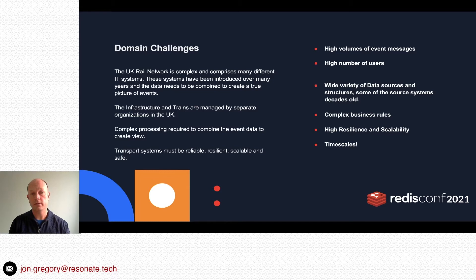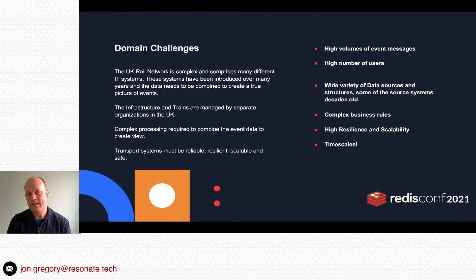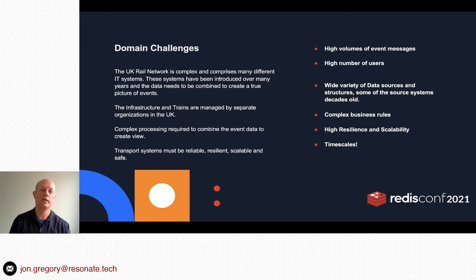Some of the challenges in the domain: the UK rail network is very complex, comprising many different IT systems introduced over many years. The data needs to be combined to create a true picture of events, even though it may not have been designed to go together. The infrastructure, trains and other functions are managed by separate organisations. There's complex processing required, and above all else it's a transport system — the system needs to be reliable, resilient, scalable, but above all safe.